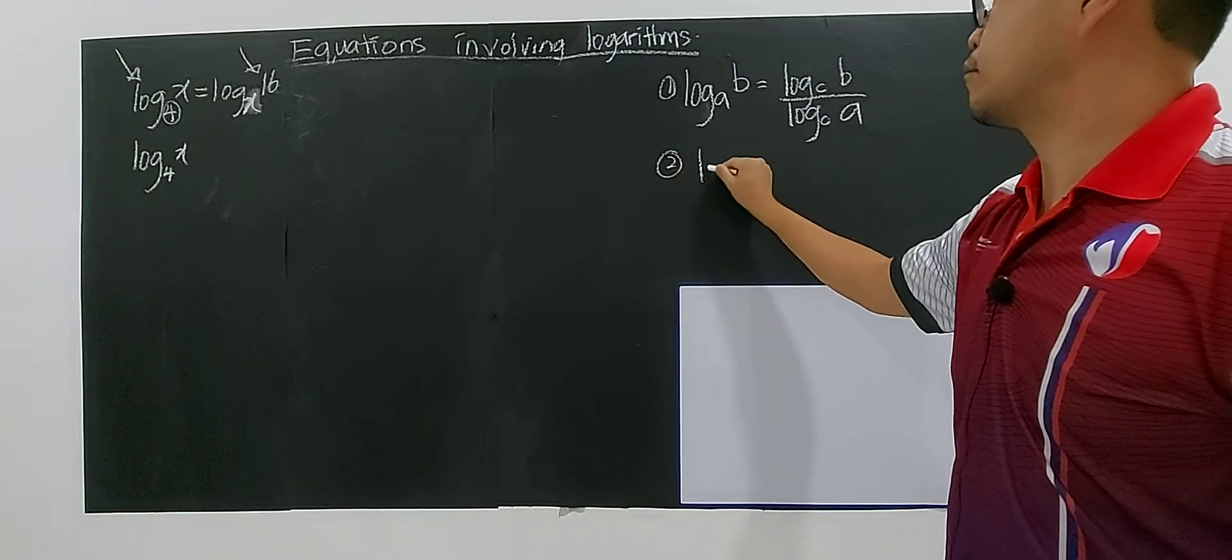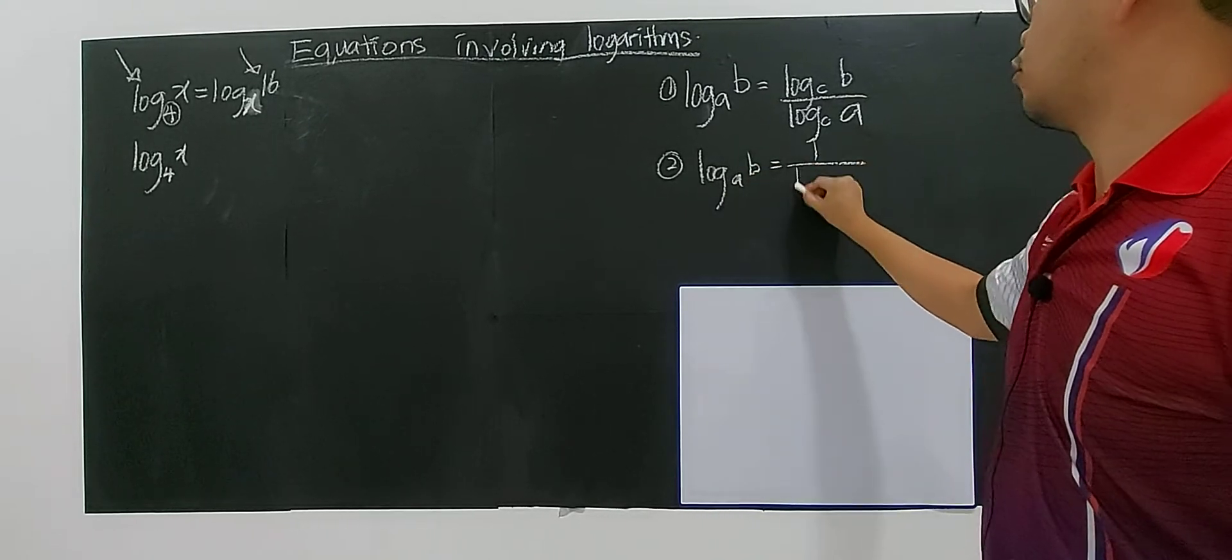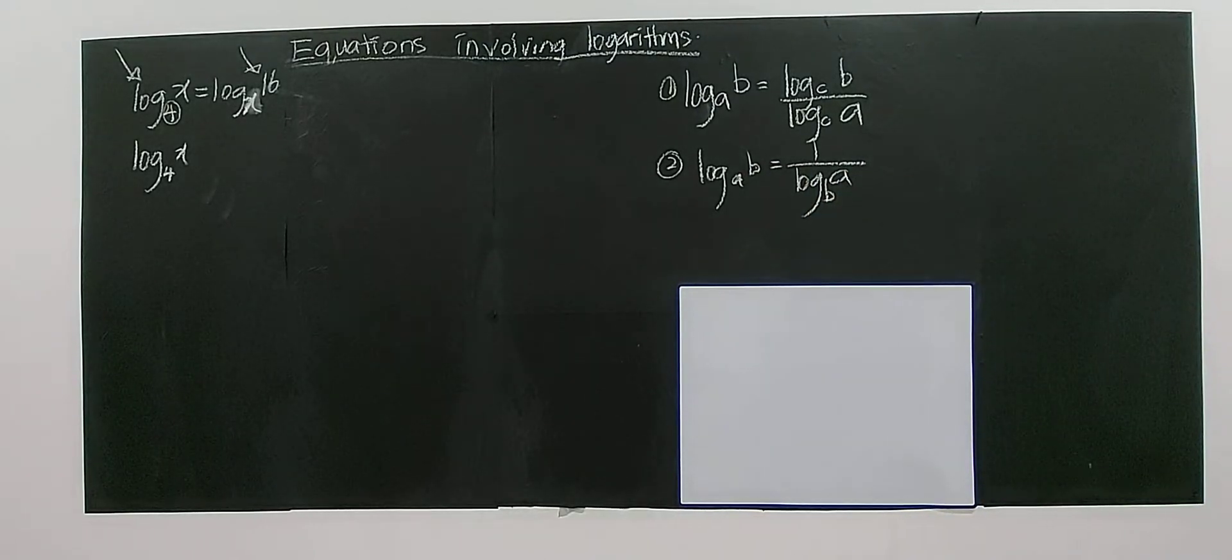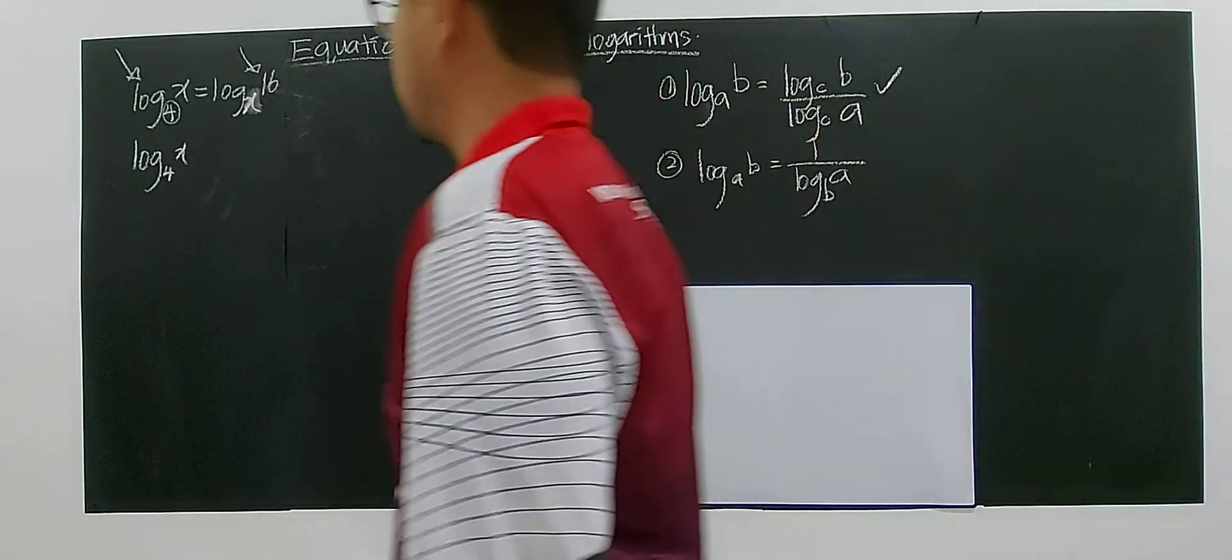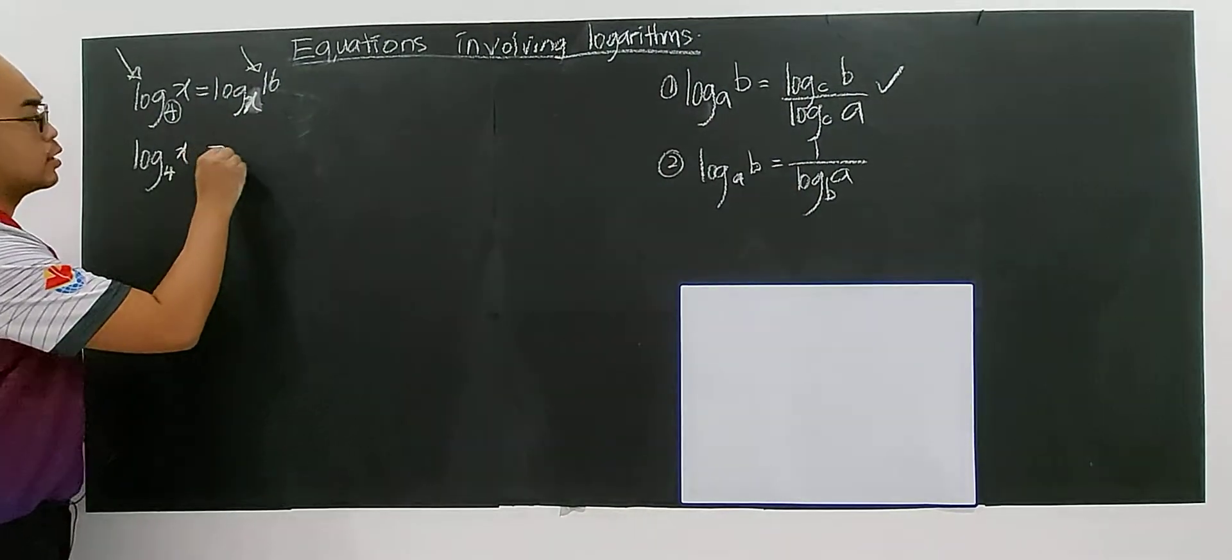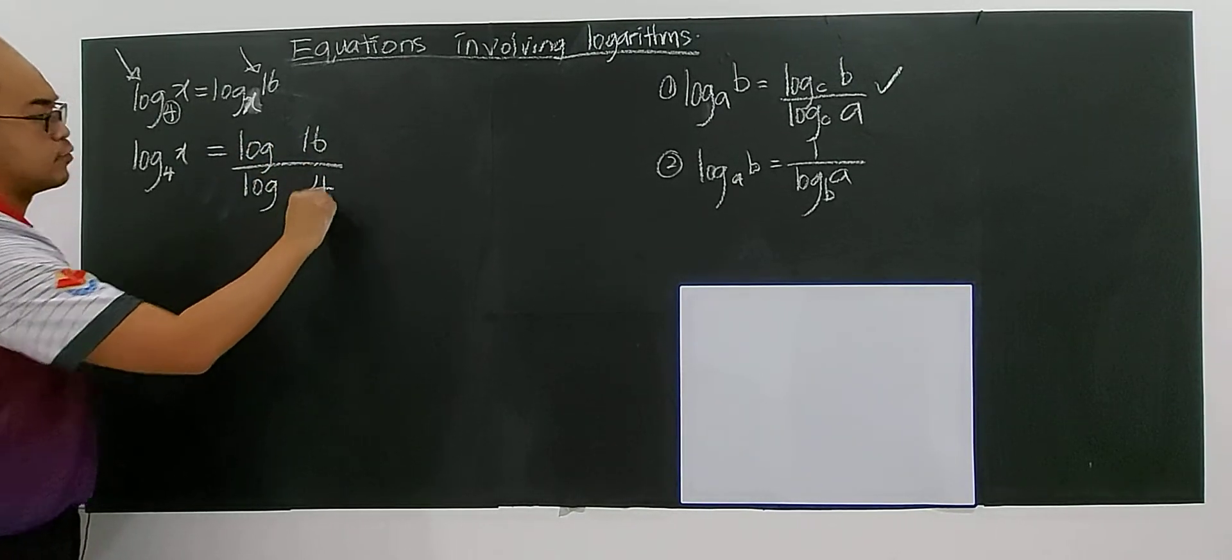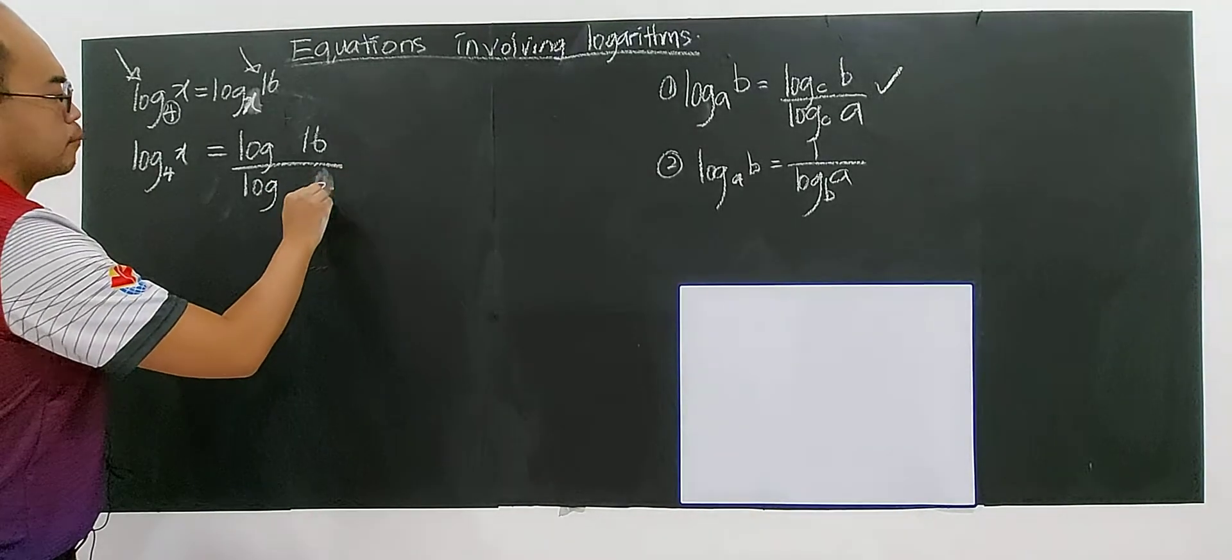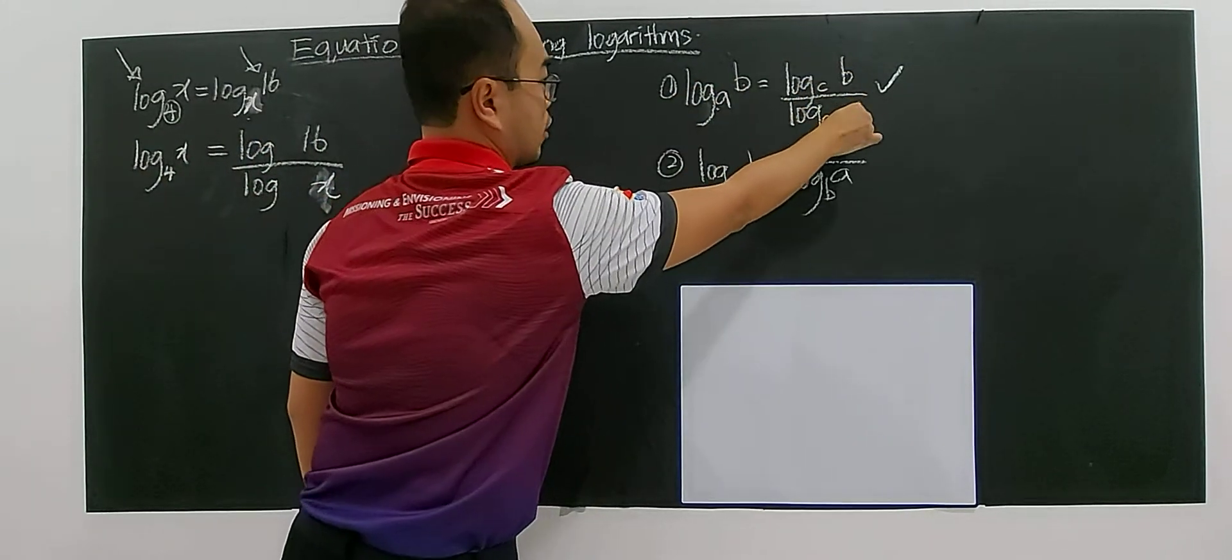The second formula that you learn will be, if I have log B base A, you can do 1 over, then the B become the base and the A become the value inside the log. This is the two formula, the two only formula for changing the base of a log. So this case I may use the first one.